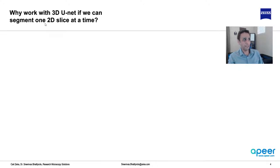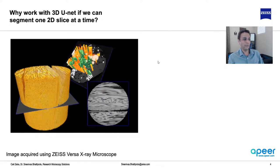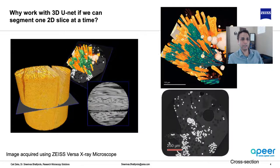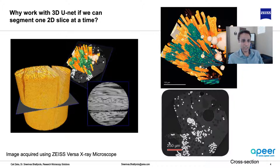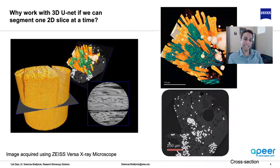So why do we need a 3D U-Net if we can segment one 2D slice at a time? Consider a fiber-reinforced material where fibers are oriented in many directions. A cross-section just shows circular cross-sections of fibers, and if a fiber is at an angle it's even less clear. By providing context from planes above and below — depending on kernel size — you get additional information that improves 3D segmentation accuracy. That's why you need a 3D U-Net.